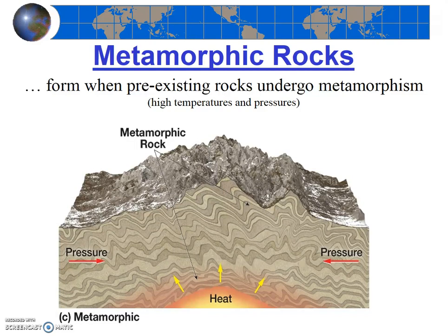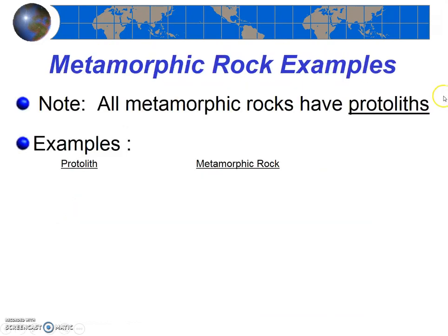The pre-existing rock is called the protolith, which literally means 'the before rock.' So all metamorphic rocks have protoliths. The prefix proto literally means before, and lith means rock. So it's the before rock, or the parent rock, to a metamorphic rock.